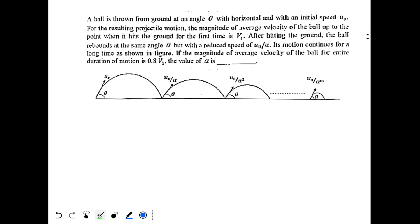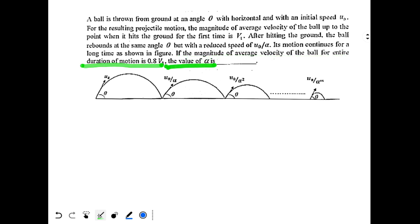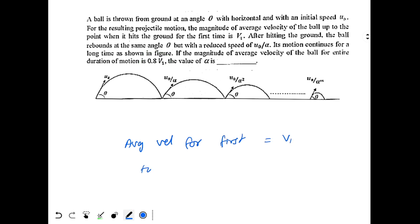The question also says that for the first projectile journey, the magnitude of average velocity of the ball up to the point when it hits the ground for the first time is v1. So for this first journey, the average velocity is v1. It also says that if the magnitude of average velocity of the ball for the entire duration of motion is 0.8 v1, what is the value of alpha? So average velocity for the first journey is v1, and average velocity for the total journey is 0.8 v1 — we have to find alpha.